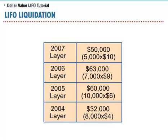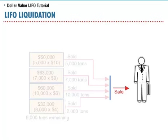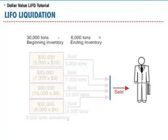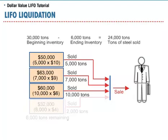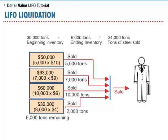The most recent layer, the 2002 layer, is liquidated first, followed by the 2001 layer, and so on. Knowing that we started with 30,000 tons and had only 6,000 tons remaining on December 31, 2003, we must have sold 24,000 tons of steel. The 2002 layer is completely eroded because only 5,000 tons were purchased in 2002, leaving 19,000 tons to account for. The 2001 and 2000 layers are also completely eroded. Because the amounts purchased in 2001 and 2000 total only 17,000 tons, 2,000 tons need to be subtracted from the next layer. As a result, the 1999 layer shrinks from 8,000 tons to 6,000 tons.